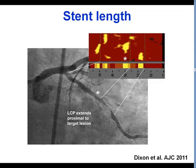Sometimes the actual presence of lipid core plaque does not necessarily correlate with the area of angiographic stenosis. This is an example of a lesion in the circumflex. However, what we can see on the chemogram is that there is some lipid core plaque even more proximal than the area of maximum stenosis.